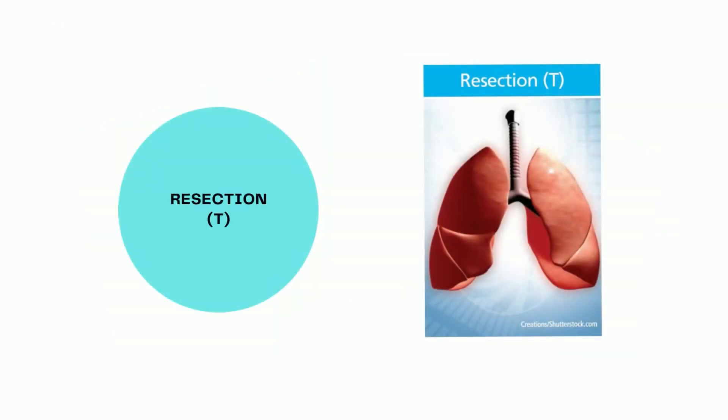Today we are looking at the root operation resection, which carries a character value of T. Root operations are the most important aspect of building a PCS code. Remember that root operations define the objective or the goal of the procedure, and that is what you should always be looking at.